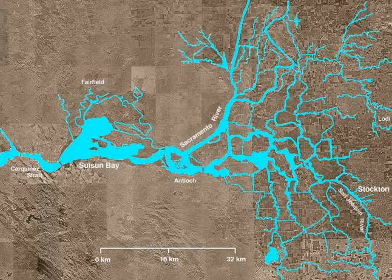Most of the delta lies within Contra Costa, Sacramento, San Joaquin, Solano, and Yolo counties. The total human population of the delta was 515,264 as of 2000. Altogether, the delta covers 1,153 square miles, with 841 square miles, or nearly 73 percent, devoted to agriculture. About 100 square miles of the delta area is urban and 117 square miles are undeveloped land.